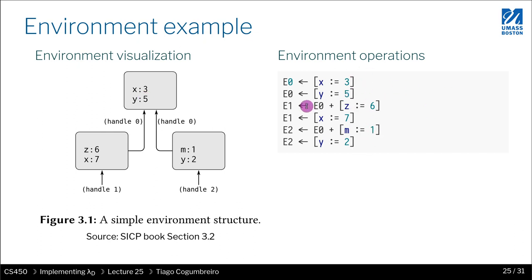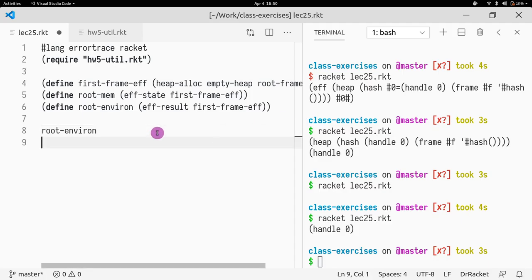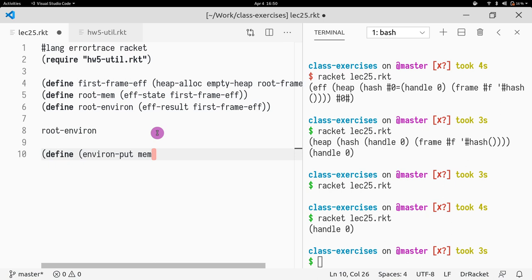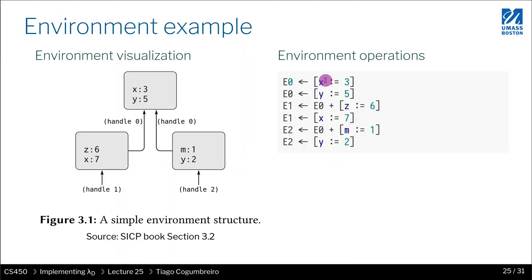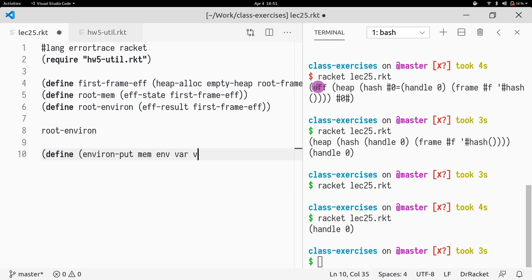So now let's try to recreate this example. To be able to do that, we need to define put, so that we can do a put of 3 and then a put of 5. How do we do environ-put? It takes a memory, and then some handle which we call the environment. Then what do we need to put? We have these parameters: the first one is the handle, then the global memory, and then the environment, the variable var, and then value.